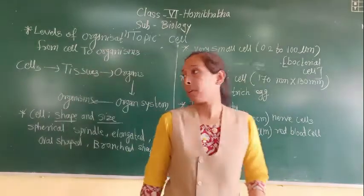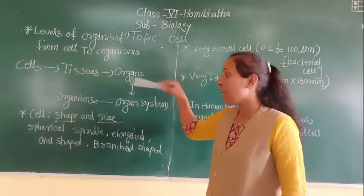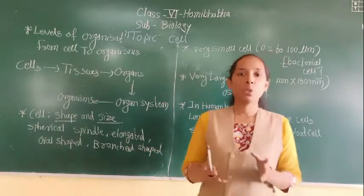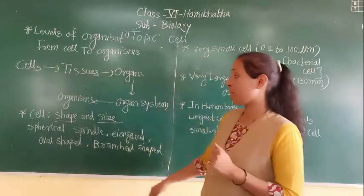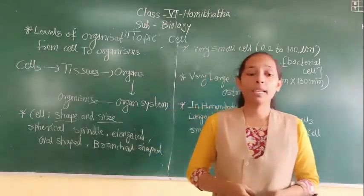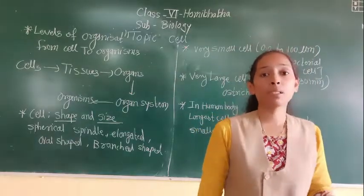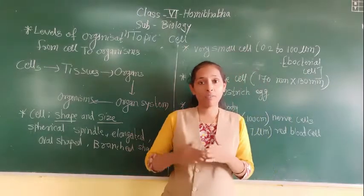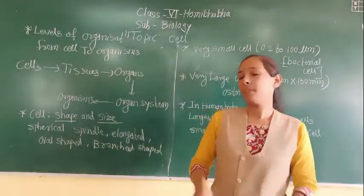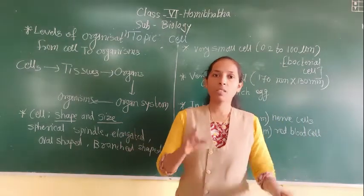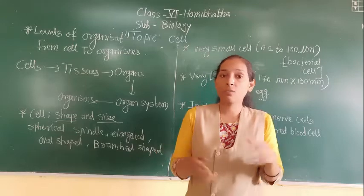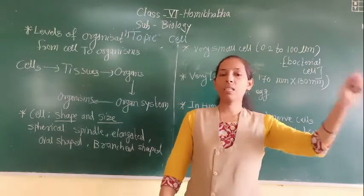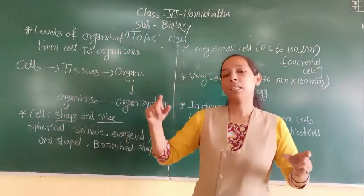Today we have discussed the level of organization and the shape and size of cells. The shape and size of a cell do not depend on the size of the organism. For example, the nerve cell of an elephant and the nerve cell of a rat are the same size — it does not vary with the size of the organism.